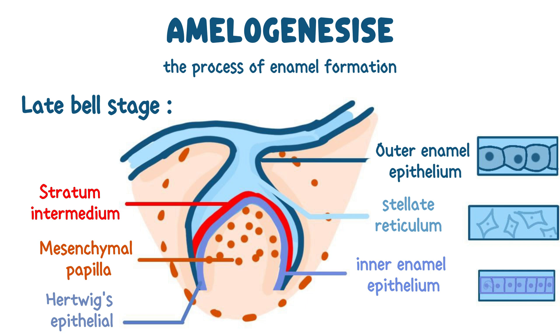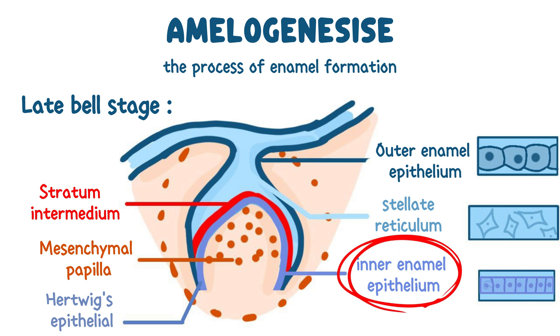The enamel develops from the inner enamel epithelium, which differentiates into pre-ameloblasts. These pre-ameloblasts further mature into ameloblasts, the cells responsible for secreting the enamel matrix.